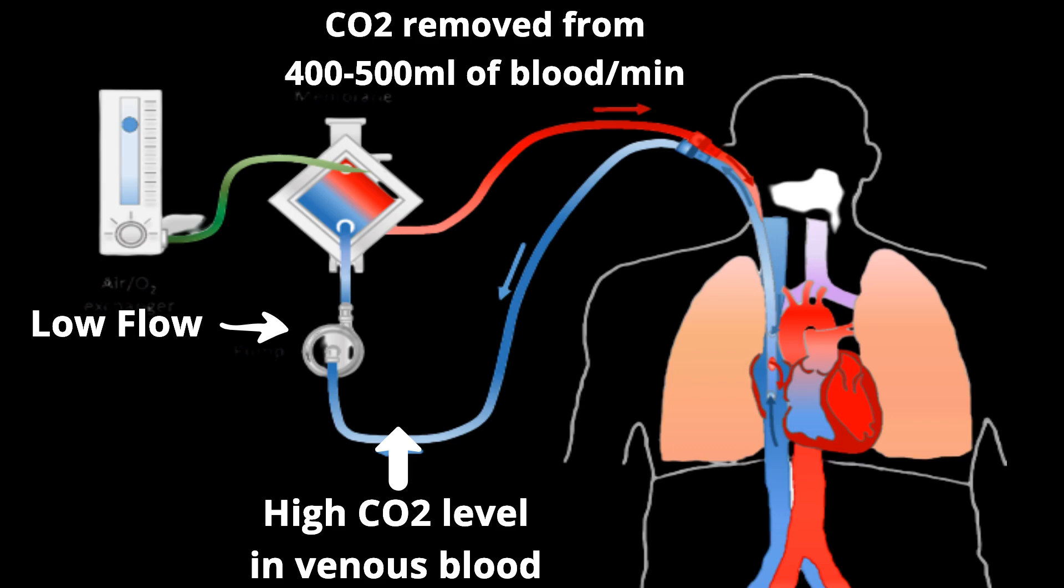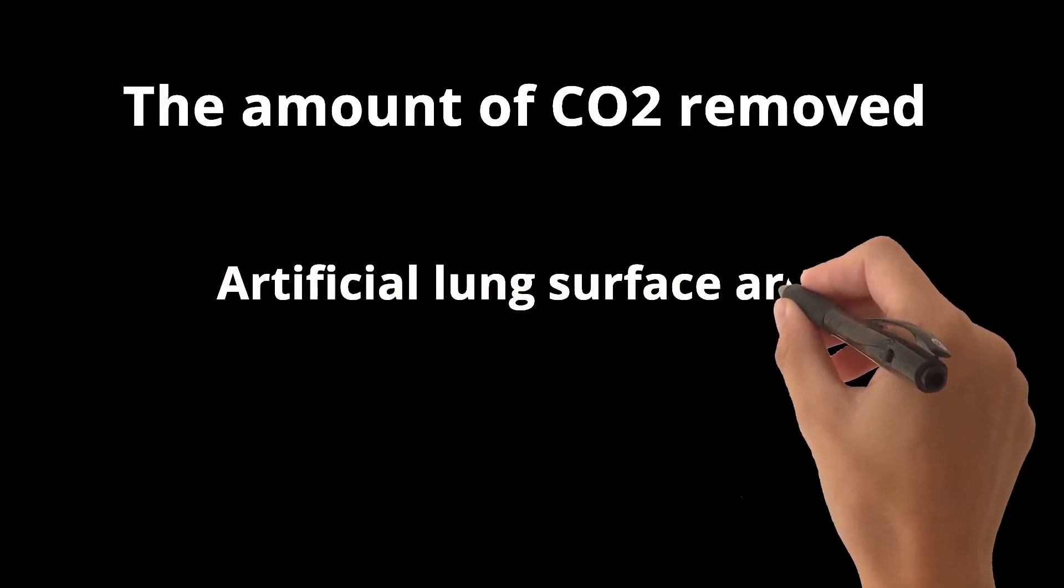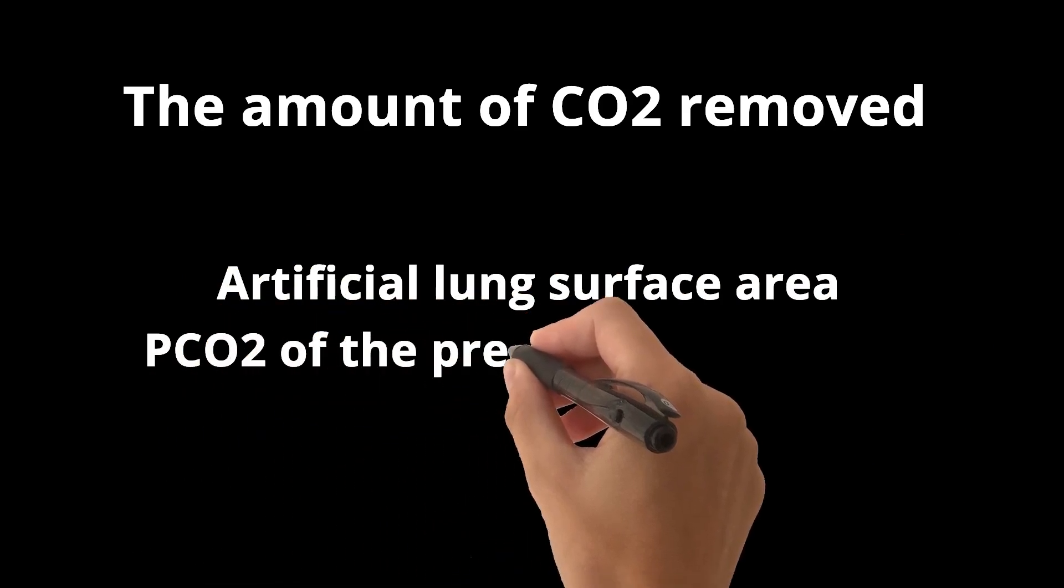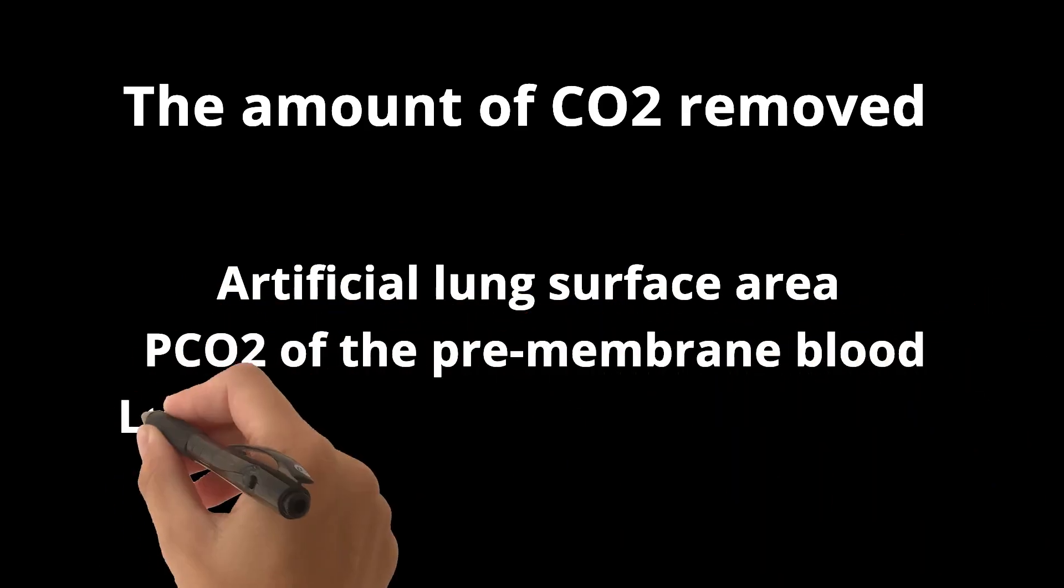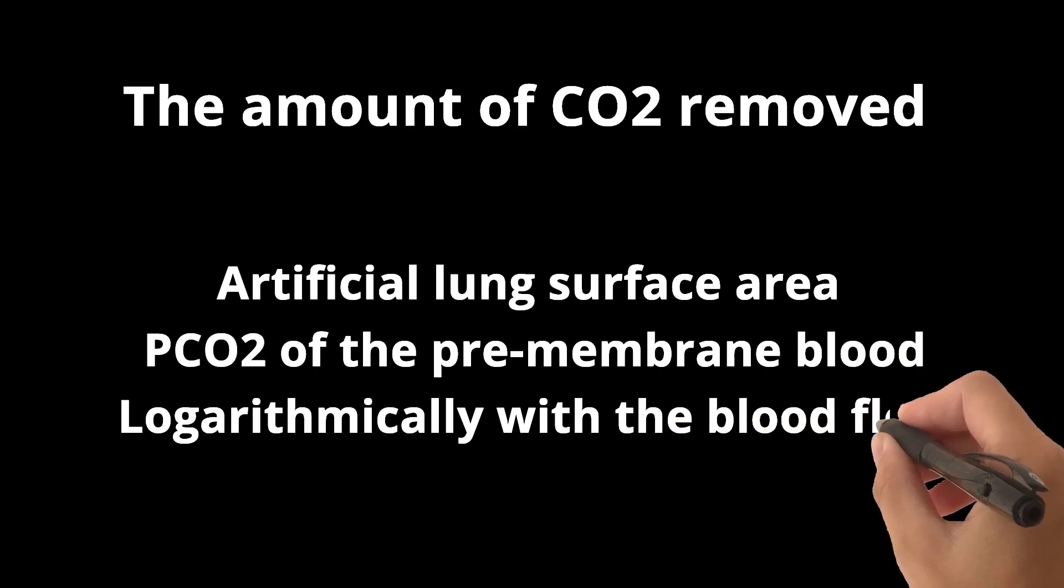The amount of CO2 removed for a given sweep gas flow increases linearly with the artificial lung surface area and the pCO2 of the pre-membrane blood, and logarithmically with the blood flow.